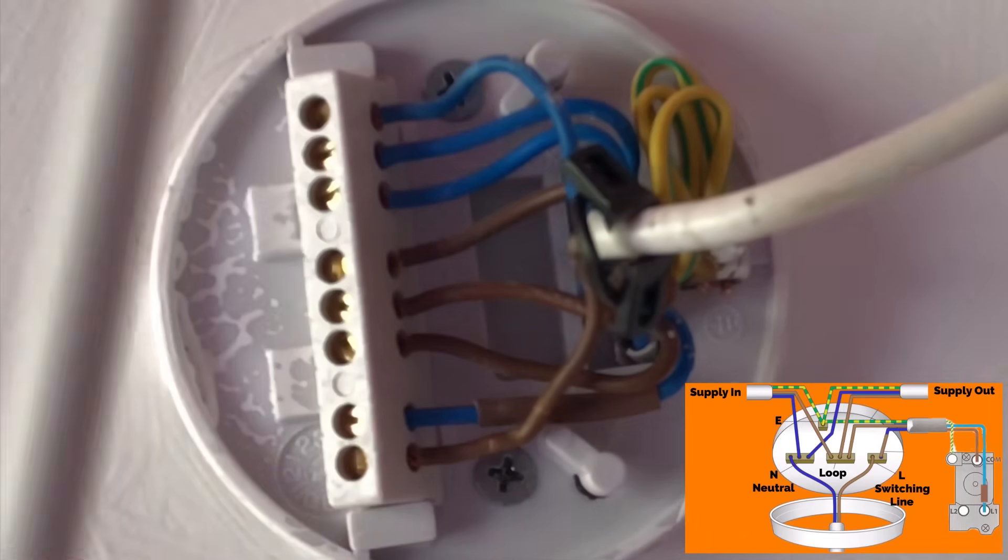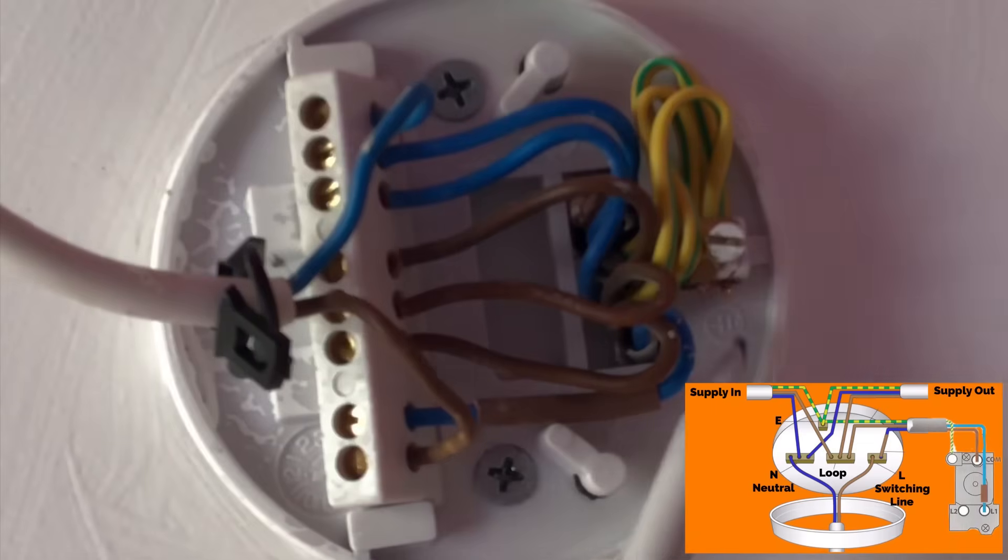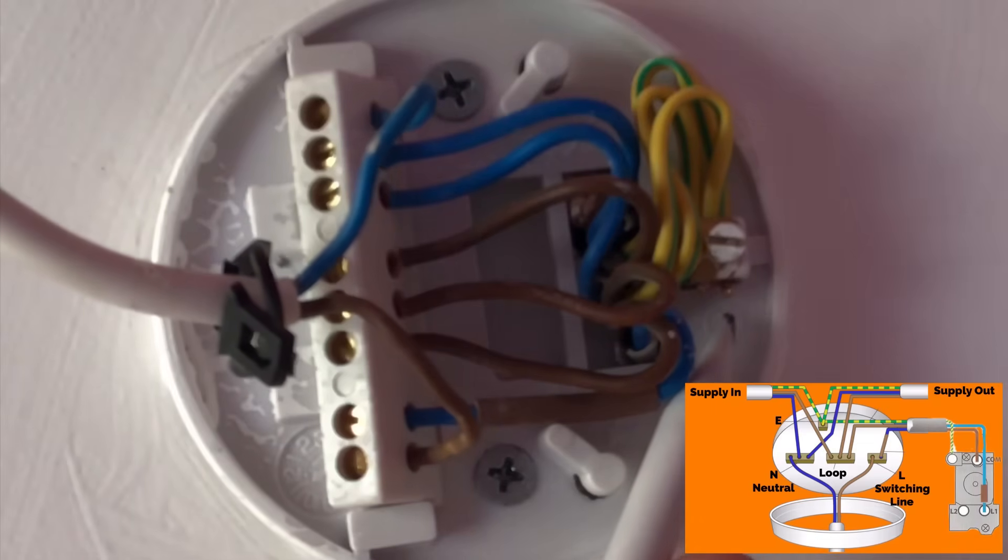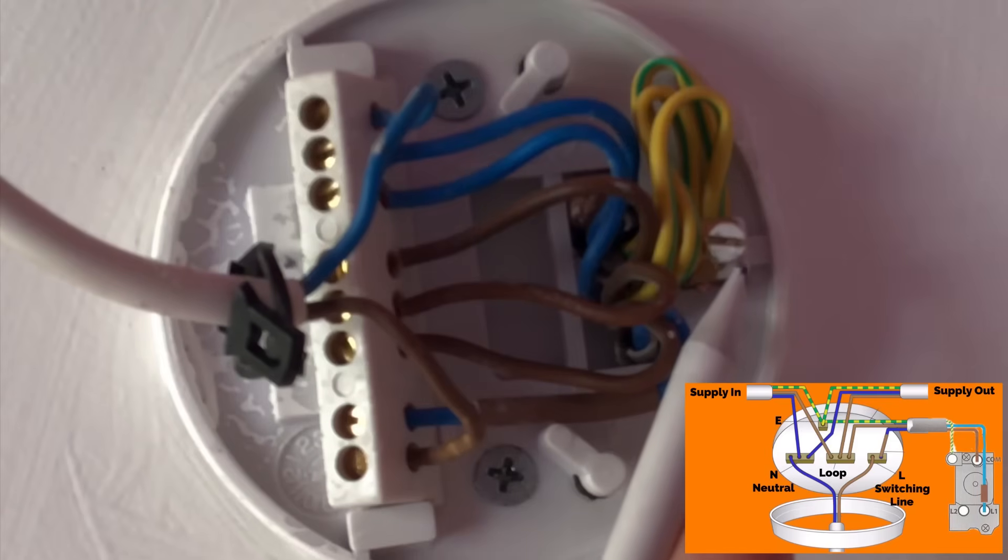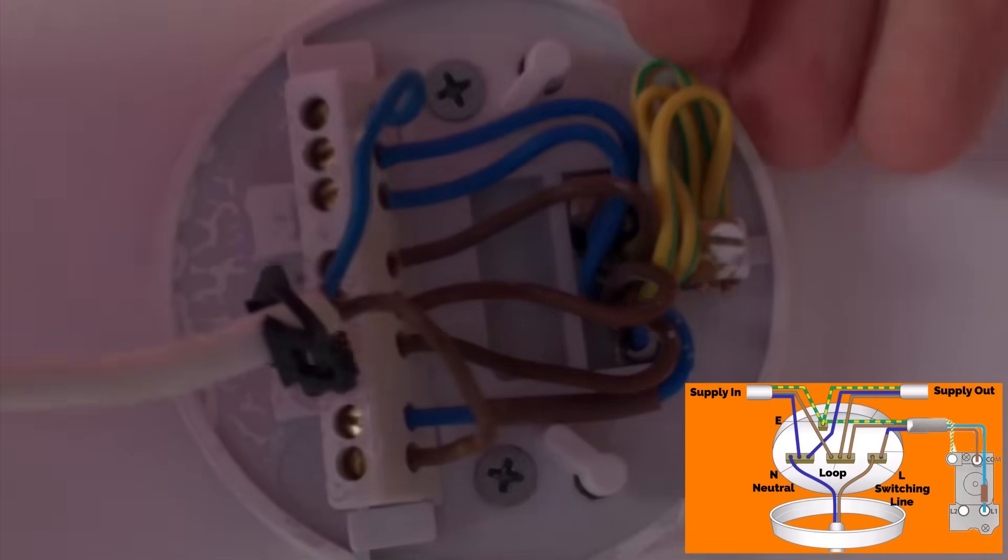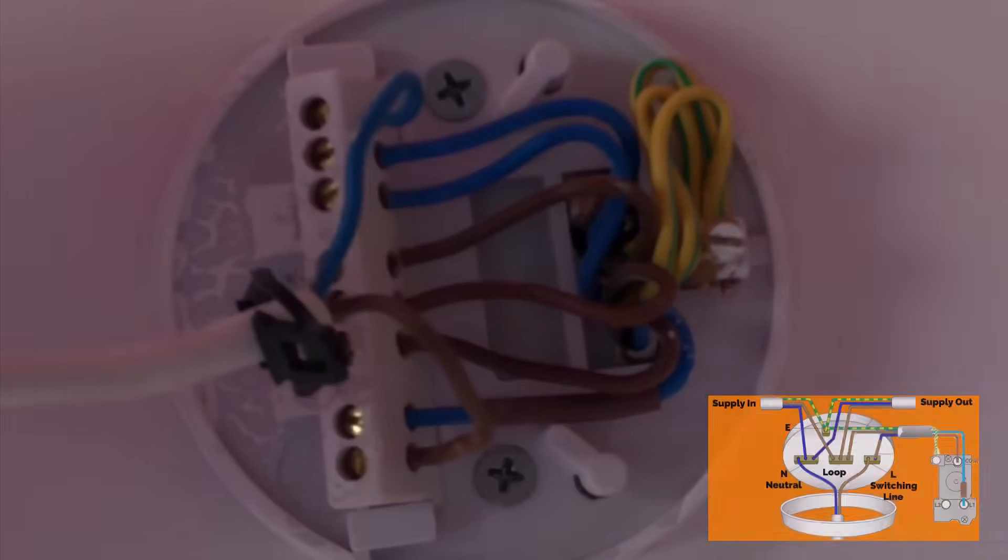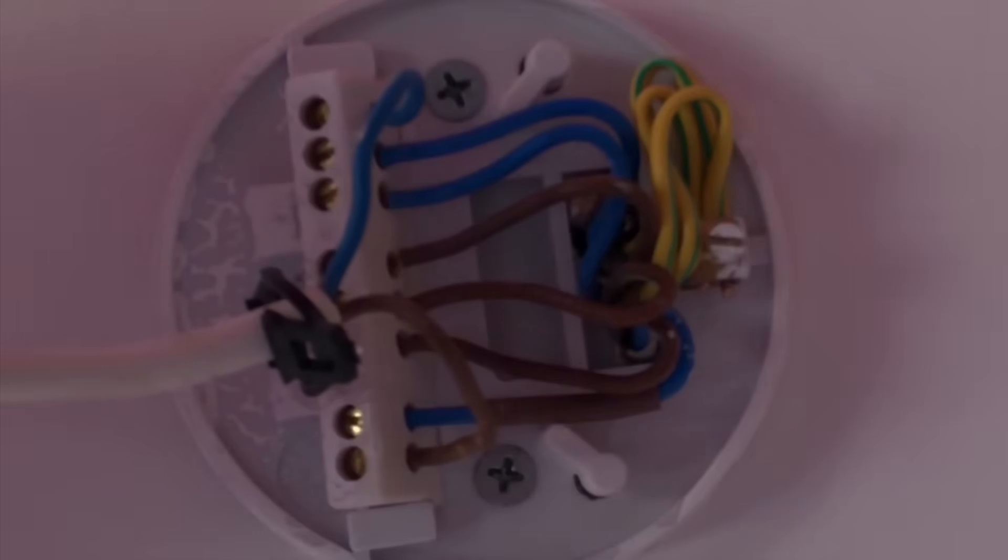The three CPCs, one from each of the twin and CPC cables, are connected in the earth terminal within the ceiling rose itself. The earth terminal is there in case the fitting is changed for an exposed conductive part, in which case the CPC would be needed. Let's have a look in another ceiling rose.